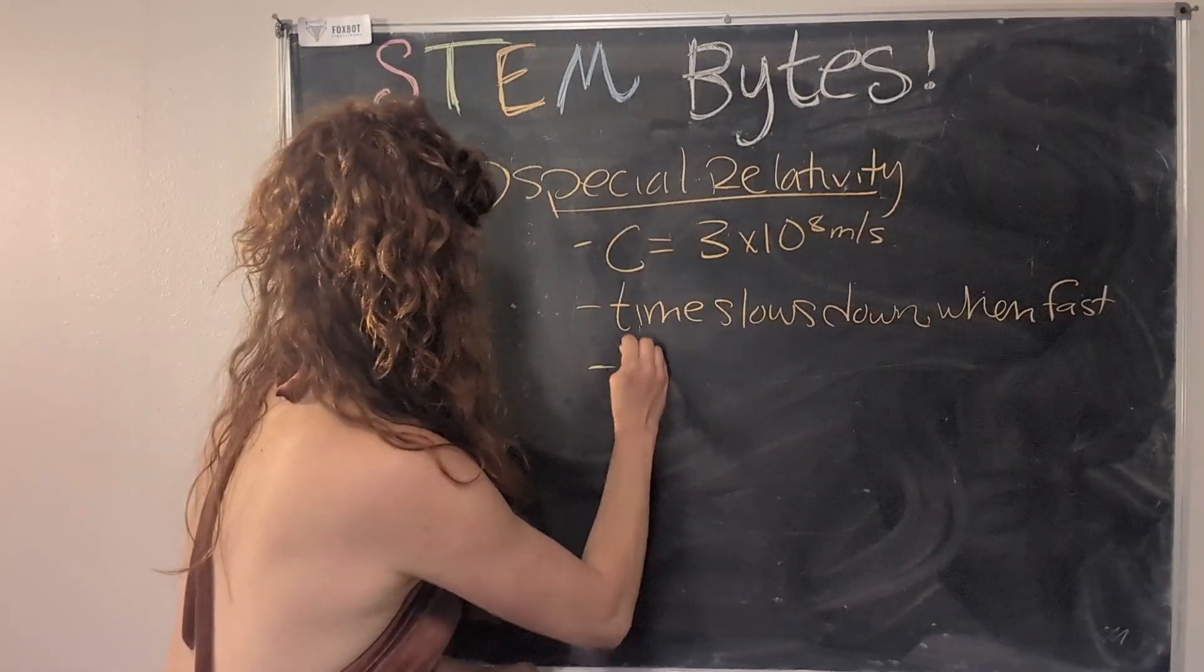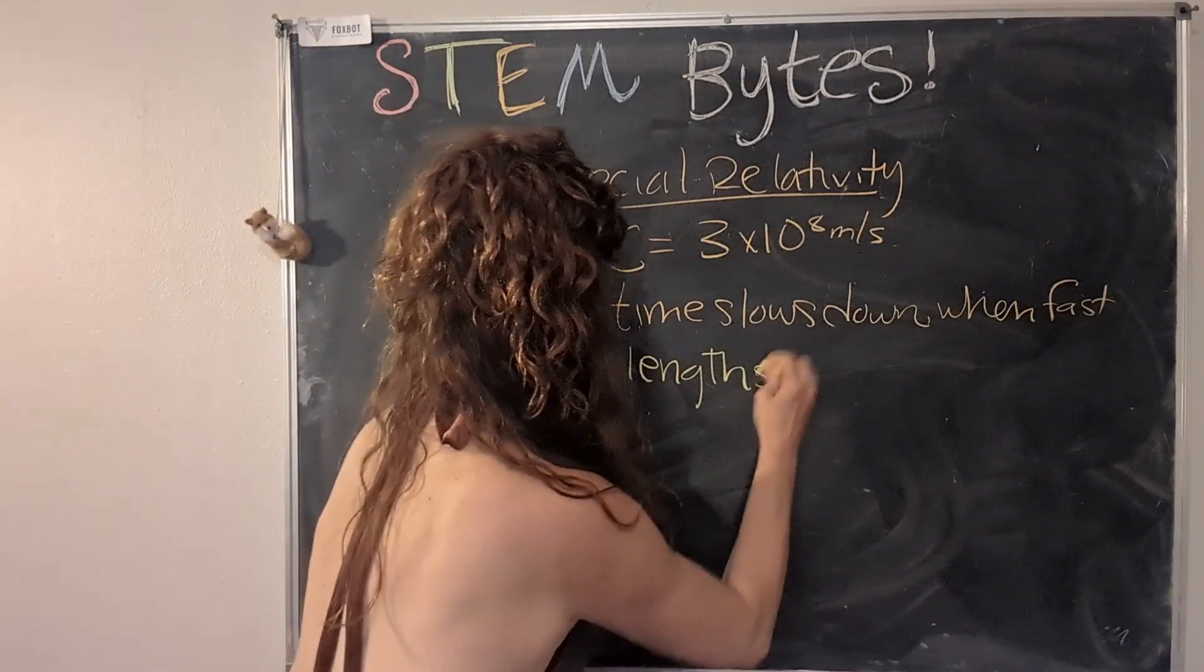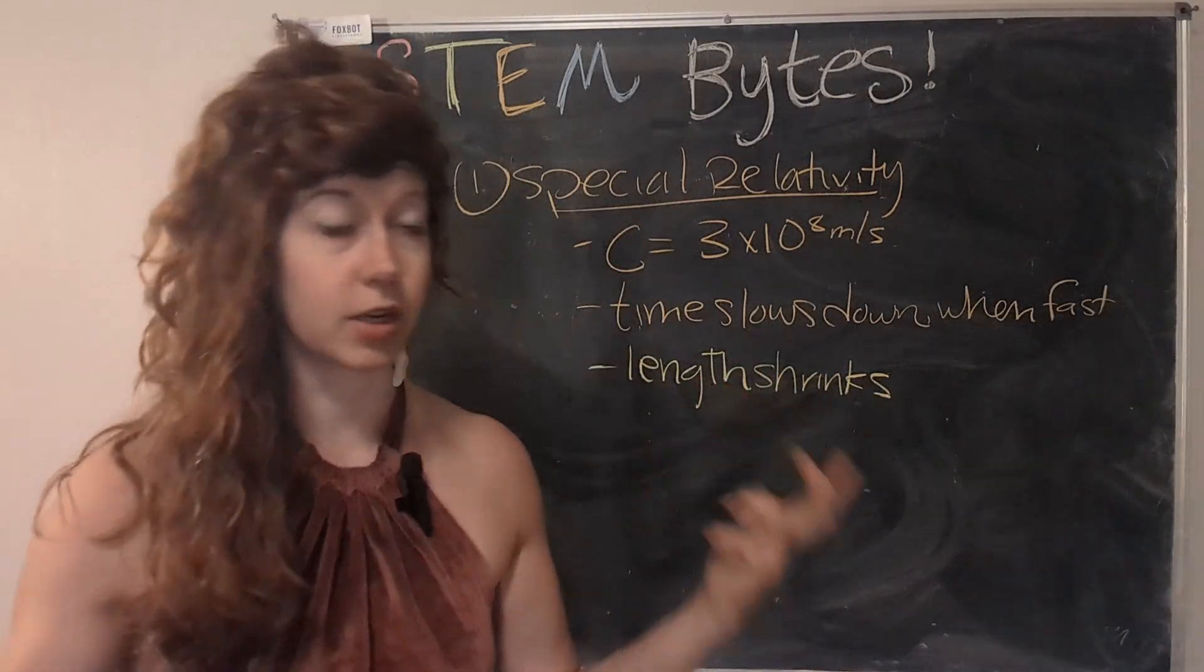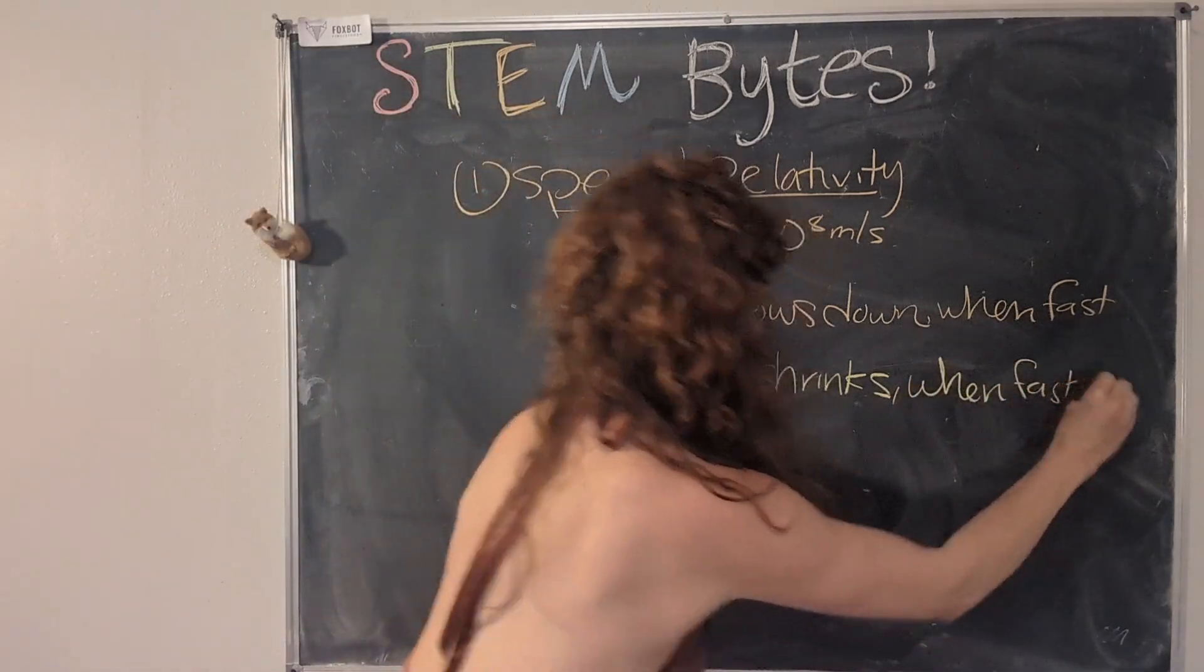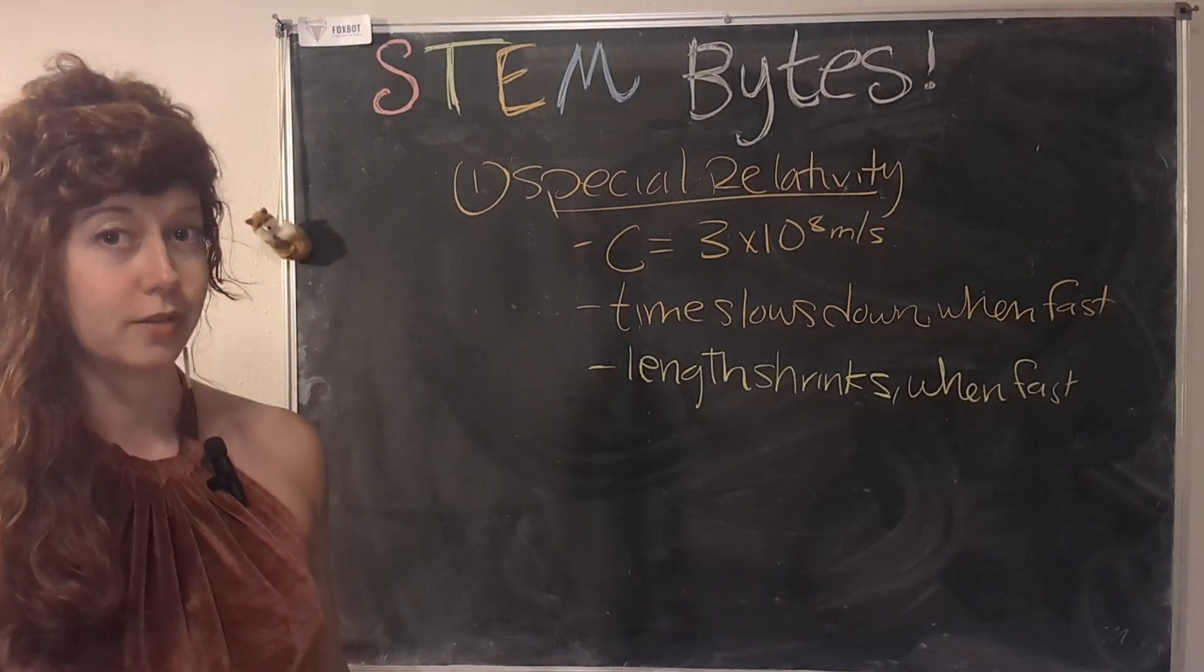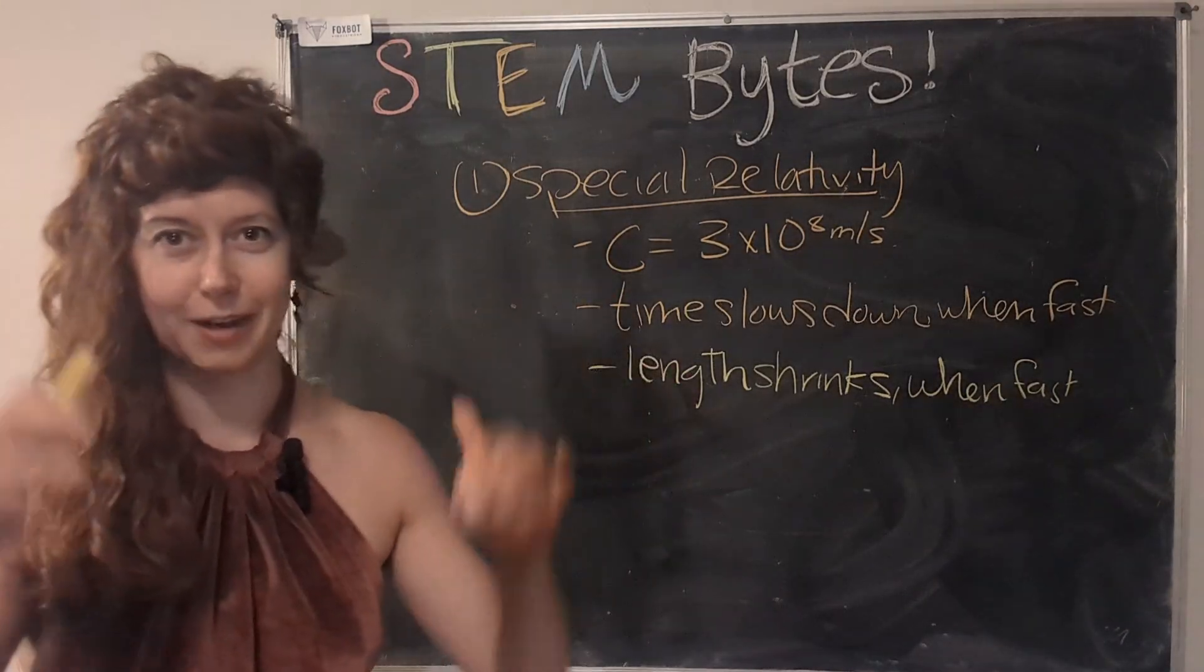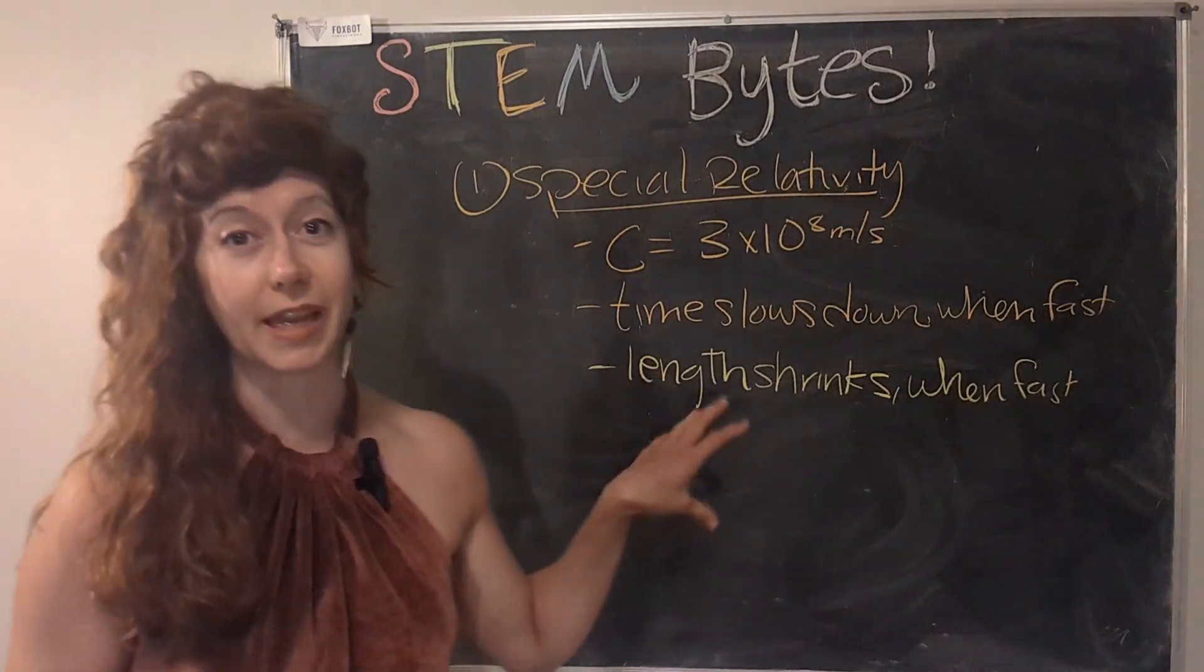Yeah, totally. So we'll say length shrinks or contracts. This is also called length contraction, when fast. So it turns out if you move fast enough, you can fit a 10-foot pole into a 9-foot barn.